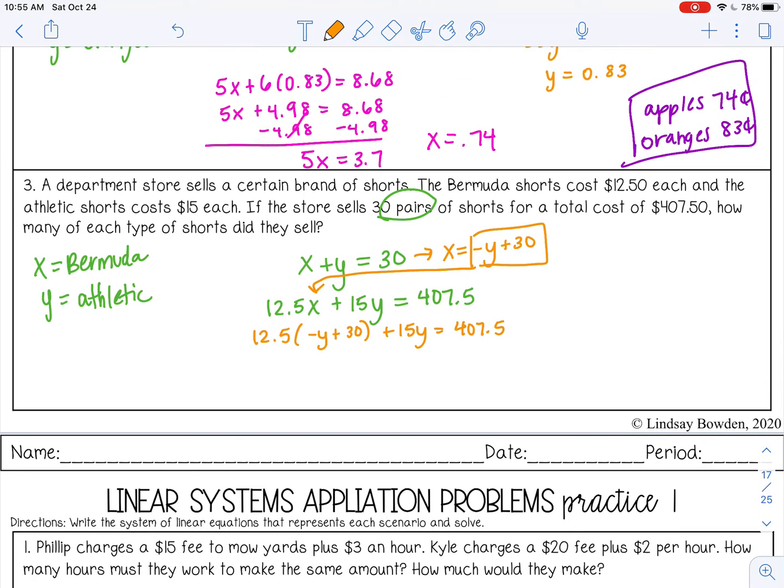All right, so we have a lot of algebra here, so be careful with your steps. So I'm going to distribute that $12.50. So negative 12.5y plus 375 plus 15y equals 407.5. All right, I have like terms. Negative 12.5 plus 15 is 2.5y. Then I'm going to subtract 375 from both sides. I'm going to bring that up here. 407.50 minus 375 is 32.5. And then divide by 2.5. So y is 13.